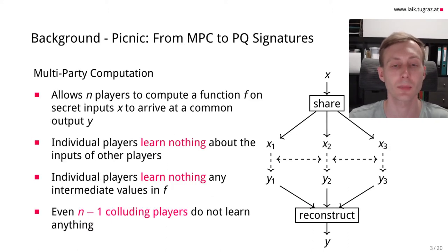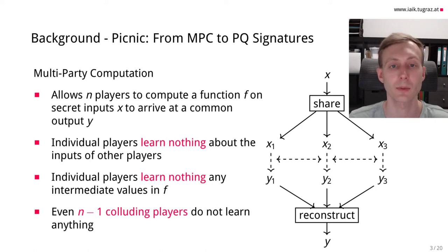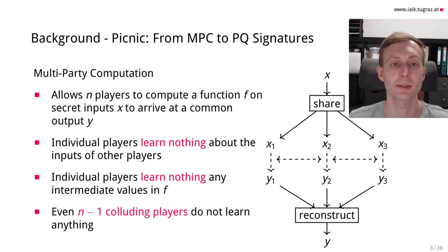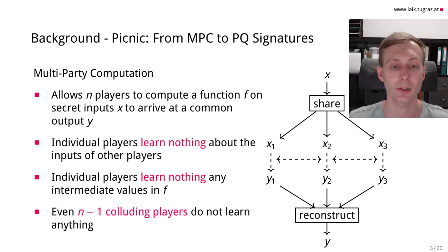Over the next few slides, I'll show how Picnic works internally. First, we need to talk about multiparty computation. Multiparty computation allows a set of N players to compute a shared function on some secret inputs and arrive at a common output. Importantly, the individual players learn nothing about the inputs of any other player and nothing about any intermediate values in the computation. With the correct MPC system, even if N-1 players collude and share their information, they cannot learn anything about the real values.